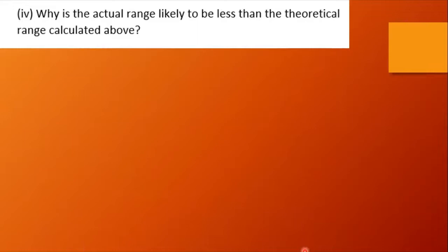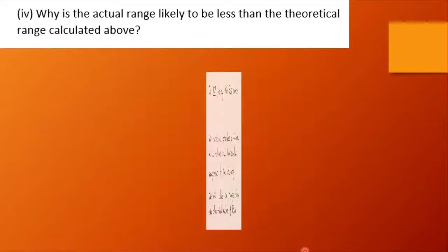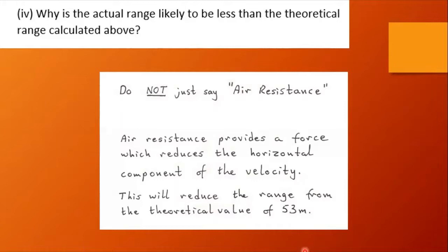Why is the actual range likely to be less than the theoretical range calculated? Well, don't just say air resistance. We would say air resistance provides a force which reduces the horizontal component of the velocity and this will reduce the range from the theoretical value of 53 meters. You've got to be a little bit smarter, a little bit cleverer at A-level and at IB level in providing these kind of answers. We could have also said air resistance provides a force which dissipates the kinetic energy.